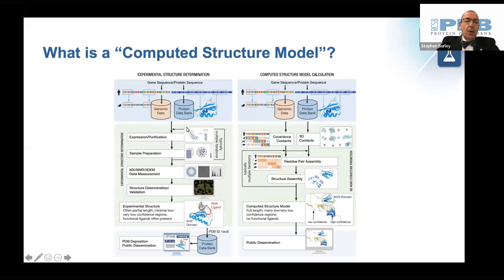Experimental structure determination methods include x-ray crystallography, cryo-electron microscopy, and nuclear magnetic resonance spectroscopy.